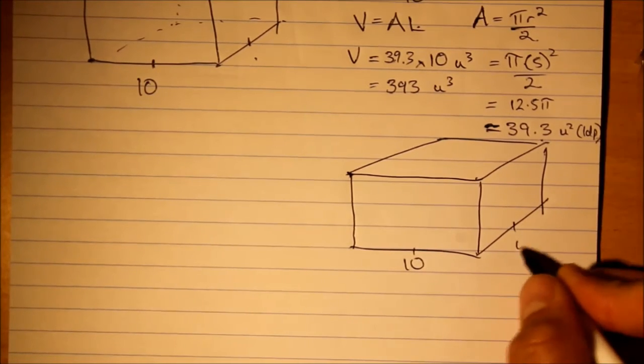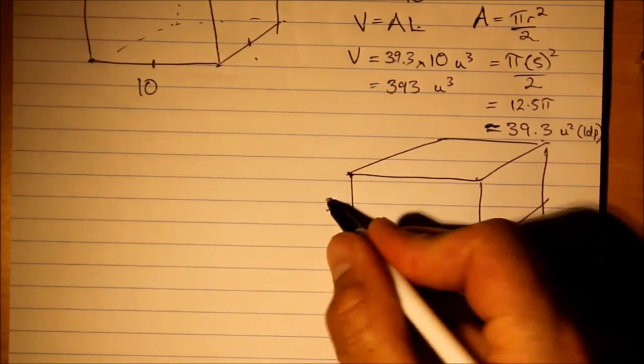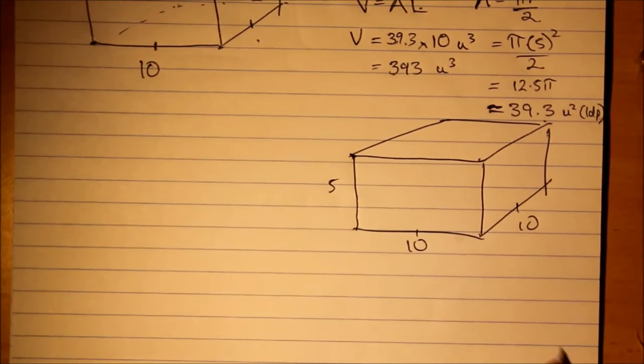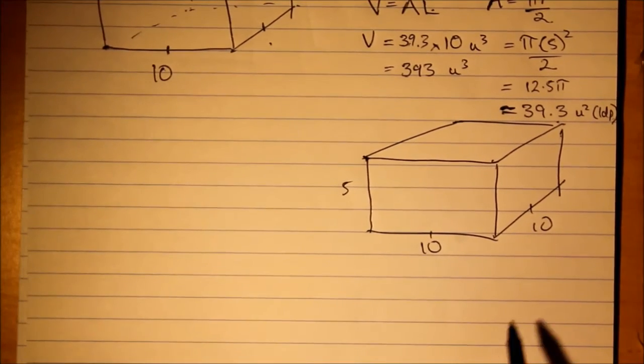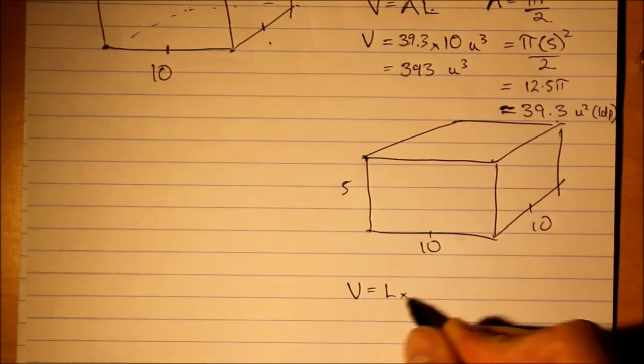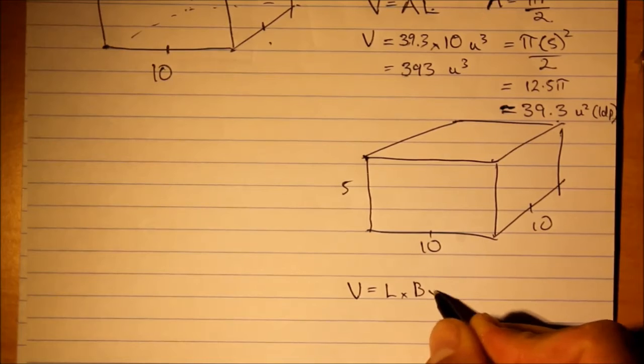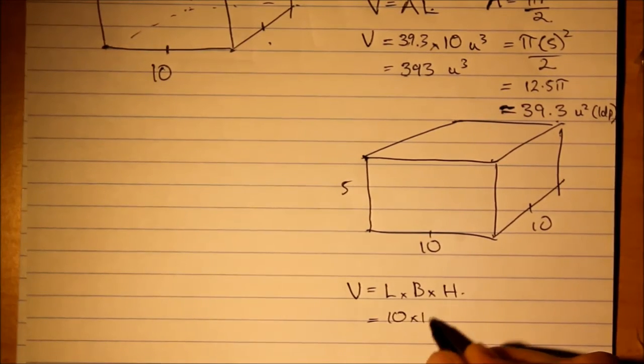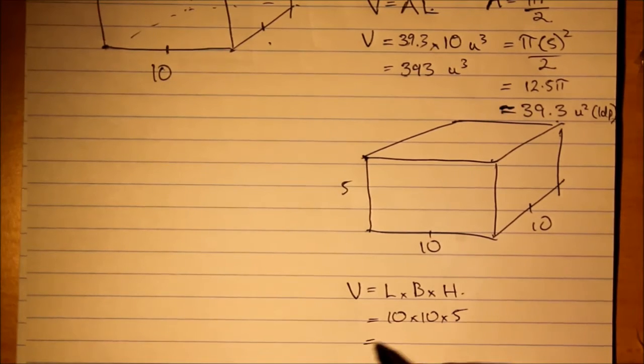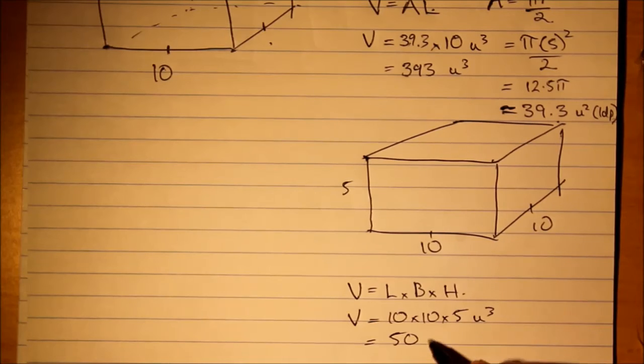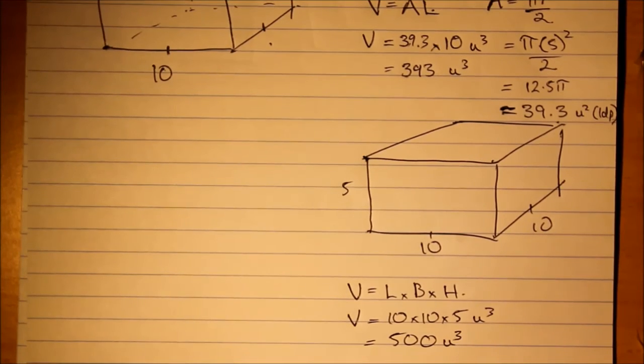Now let's find the volume of the bottom section, 10, 10, and 5. Well this is a cuboid so we don't have to do anything too complex here. It is simply length times breadth times height, which is 10 times 10 times 5 which is 500 units cubed.